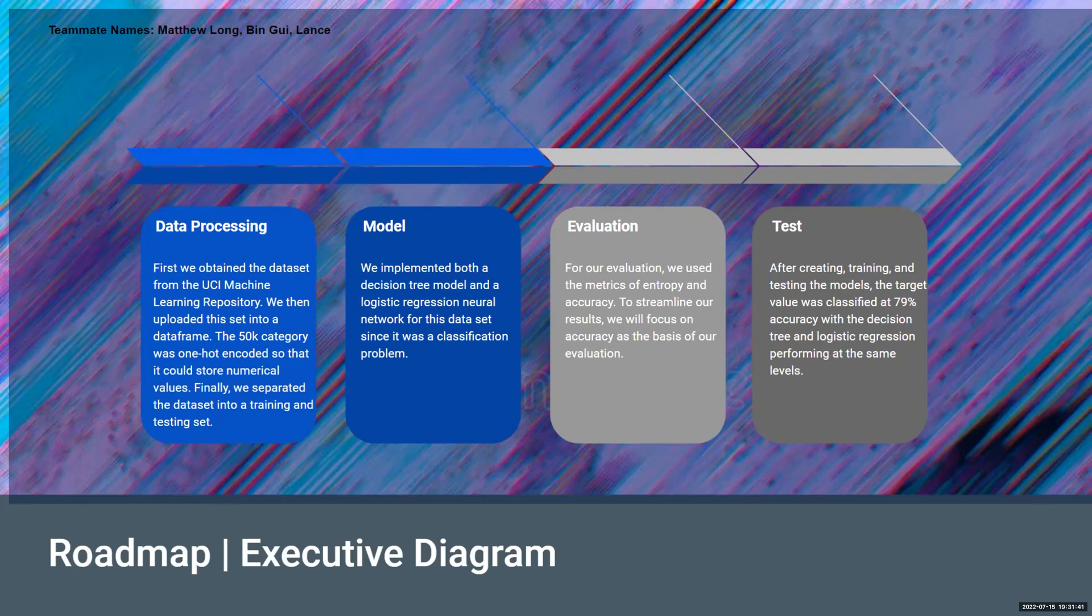Second we did the modeling, and we implemented both a decision tree model and the logistic regression neural network for the dataset since it was a classification problem. And then we did the evaluation. For our evaluation, we used the metrics for entropy and accuracy to streamline our results. We will focus on accuracy as the basis of our evaluation.